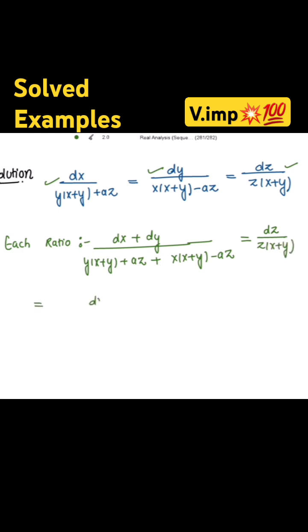So from here we get dx plus dy in the numerator as is, and in the denominator these two cancelled out and we have x plus y whole square that is equal to dz divided by z into x plus y.